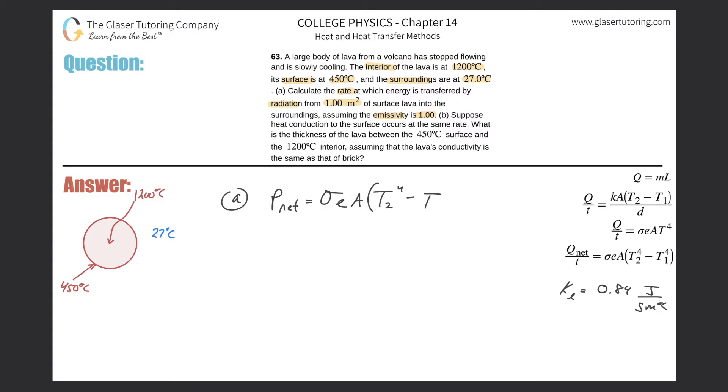And then we're going to take the temperature difference between the two, and you have to have these temperatures in Kelvin, not Celsius. So we can basically just plug in. The Stefan-Boltzmann constant is 5.67 times 10 to the minus 8, the emissivity they told us is 1, the area they also told us is 1 m².